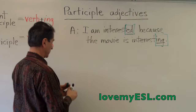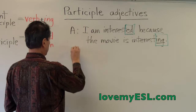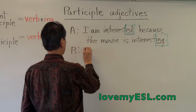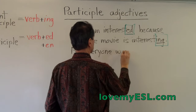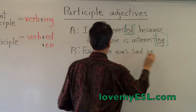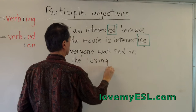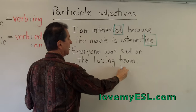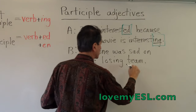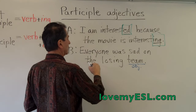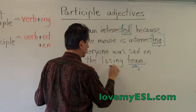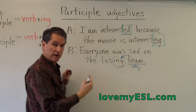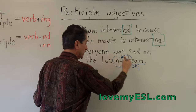That's the first difference between past and present participles. The second rule is when the object does the verb. For example: everyone was sad on the losing team. The team lost the game — the losing team lost the game. It's not 'a lost team' because the team loses, so we use -ing. The word 'team' is the object, and if the object does that verb, you put -ing on the end. Did the team lose? Yes. That's why everyone is sad, so it's the losing team.